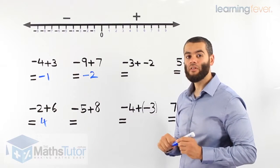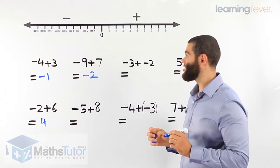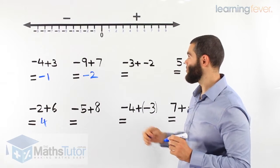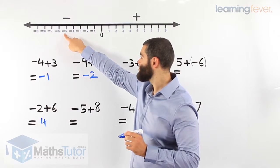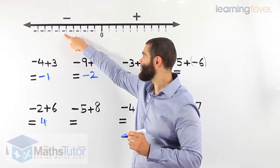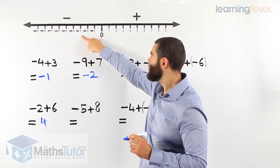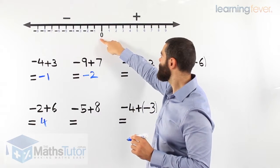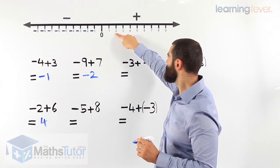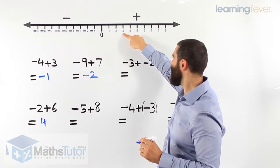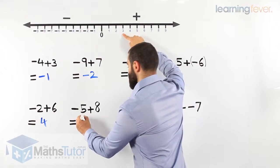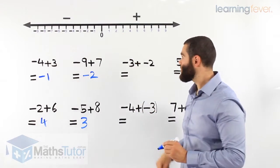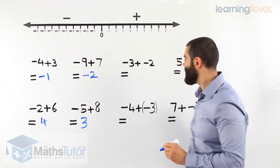Minus 5 plus 8. We start at negative 5 and we're adding 8: 1, 2, 3, 4, 5, 6, 7, 8. We land on positive 3. So 3 is our answer.